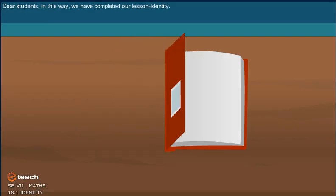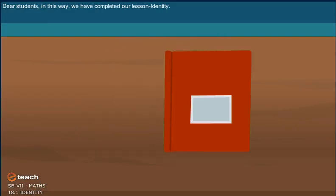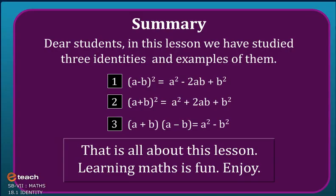Dear students, in this way we have completed our lesson on identity. Summary: in this lesson we studied three identities and examples of them. A minus B whole square equals A square minus 2AB plus B square. A plus B whole square equals A square plus 2AB plus B square. A plus B into A minus B equals A square minus B square. That is all about this lesson, students. Maths is fun, so keep learning.